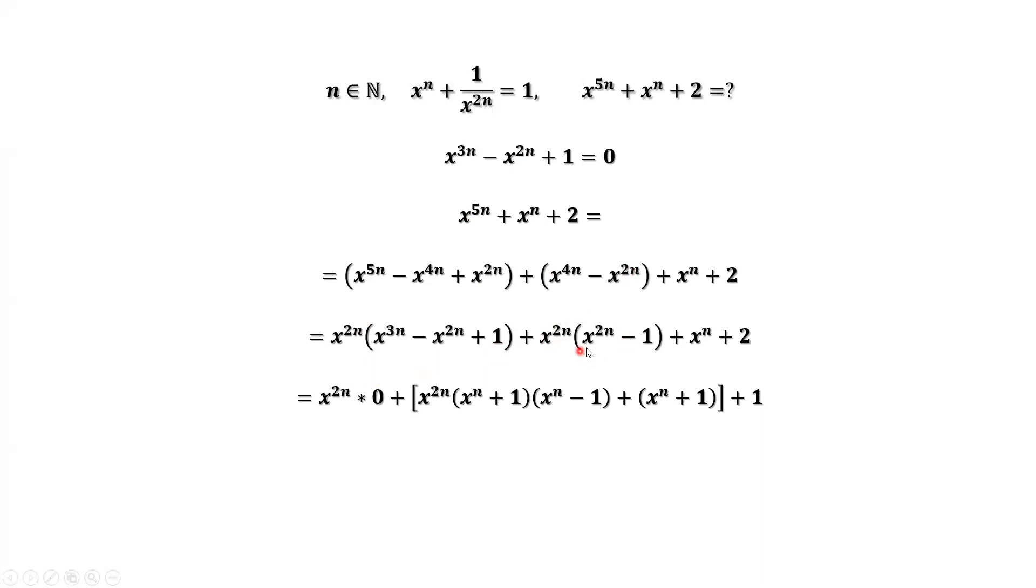This part, the second part: x^(2n) - 1. We can factor this part as (x^n + 1)(x^n - 1). The last part we can separate into two groups: x^n + 1, then plus another one, because we have 2 here.